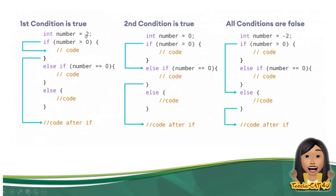For example, int number is equal to 2. Yung 2 ba is greater than 0? Ibig sabihin nun, gagawin niya yung block of code dito. After niya gawin yung block of code dito, automatic nalalabas na yung program ninyo. Hindi na niya gagawin yung else if tsaka yung else. Hindi na niya titignan o bibisitahin yung mga else if ninyo.